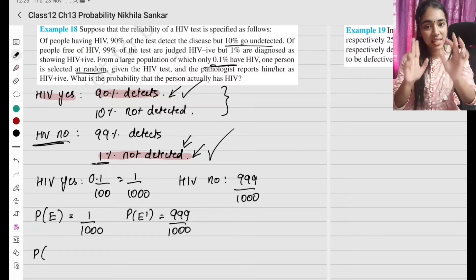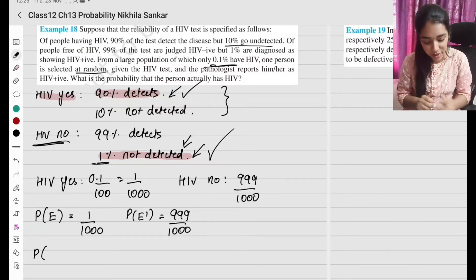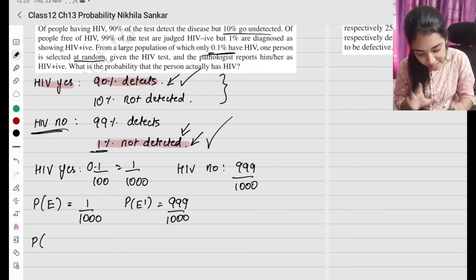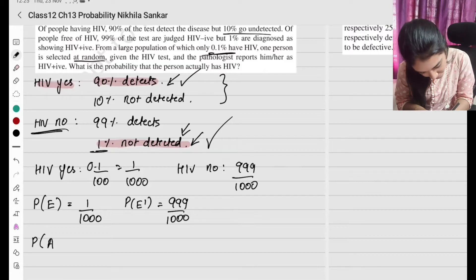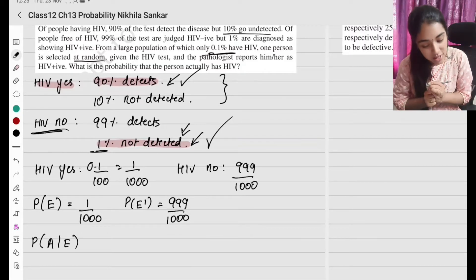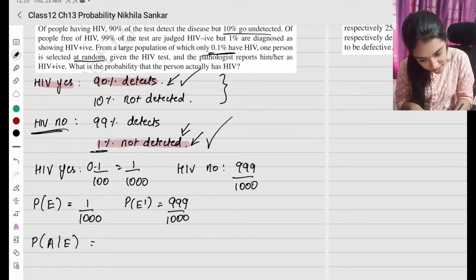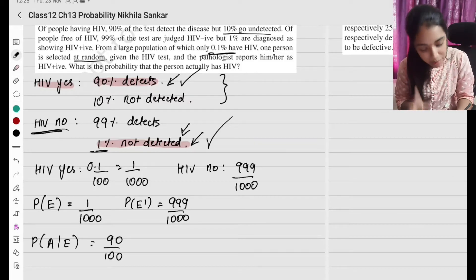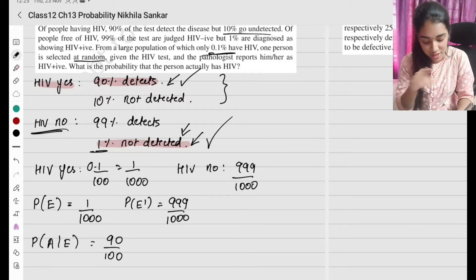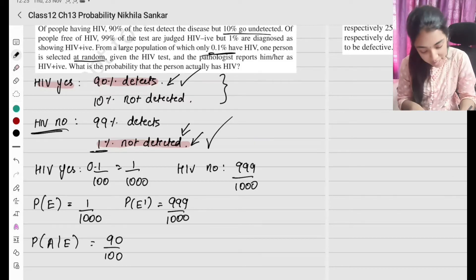There are two different possibilities. The person has HIV and the result is also correct — this is going to be 90 divided by 100, which is 90%. So this is one possibility.